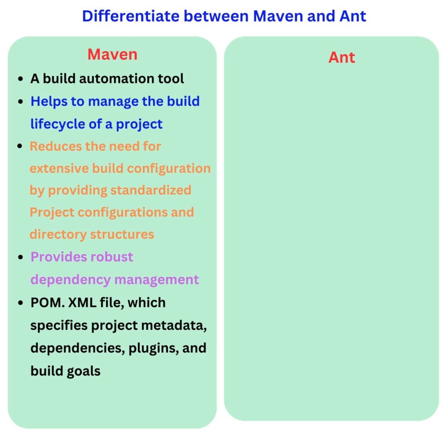Differentiate between Maven and Ant. Maven, a build automation tool, helps to manage the build lifecycle of a project. It reduces the need for extensive build configuration by providing standardized project configurations and directory structures, and provides robust dependency management.